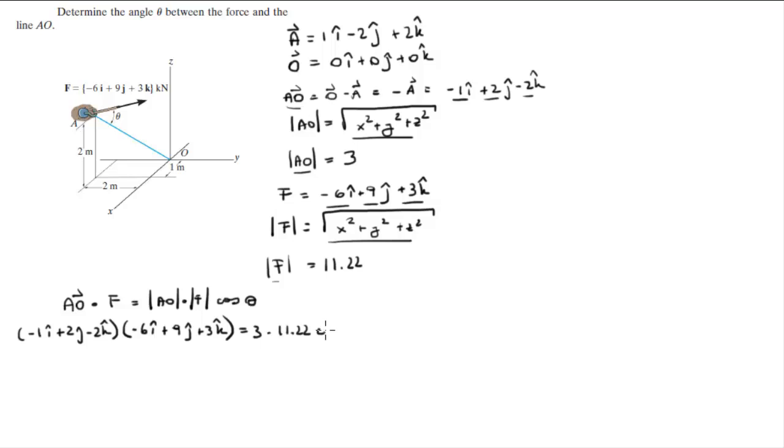So negative 1 times negative 6 is 6, positive 2 times 9 is 18, and negative 2 times positive 3 is negative 6. 6 plus 18 minus 6 is 18, which equals 3 times 11.22 which is 33.66 times the cosine of theta.